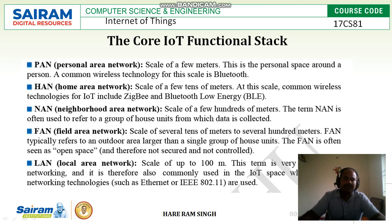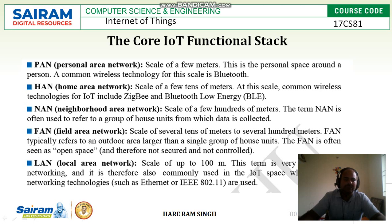The next network is HAN, the Home Area Network, at a scale of a few tens of meters. Its receiver range is around a few tens of meters. Common wireless technologies for IoT at this scale include ZigBee and Bluetooth Low Energy. Devices can work for the home area network within ranges like 10 meters or 20 meters.